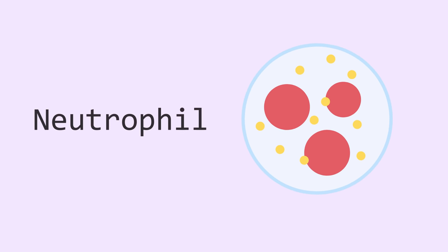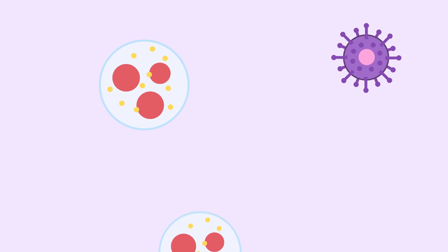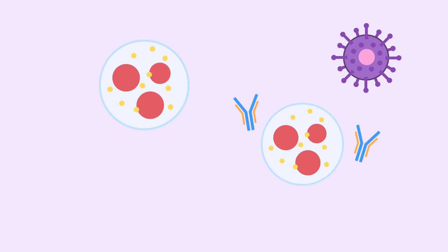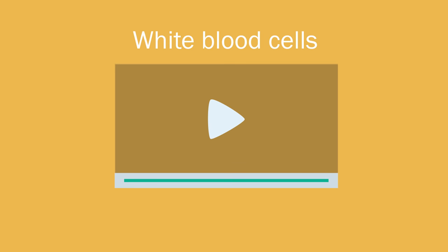Some of the white blood cells are called neutrophils, which hunt down, kill and ingest pathogens. Other white blood cells produce antibodies, which destroy particular pathogens. You can learn more about this on our video on white blood cells.